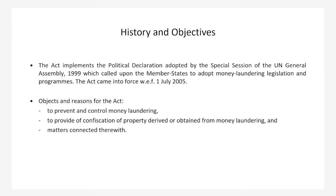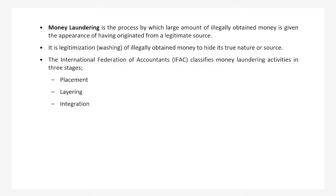The objective of the PMLA is threefold. First, to prevent and control money laundering. Second, to provide for confiscation of property derived or obtained from money laundering and matters connected therewith. This legislation not only focuses on criminalising those involved in money laundering but also on preventing it. If you have committed some offence and generated money from it, we must trace that trail and confiscate those properties.